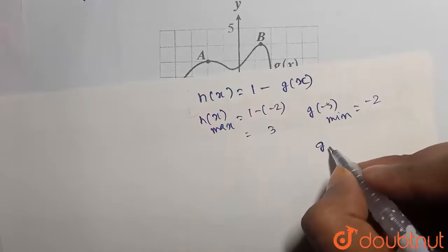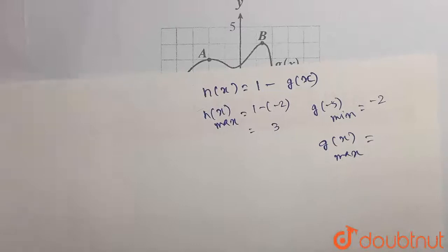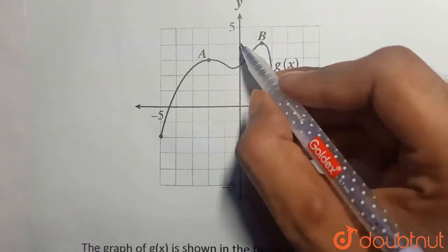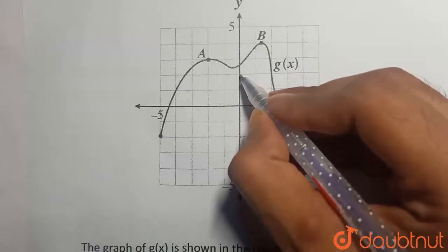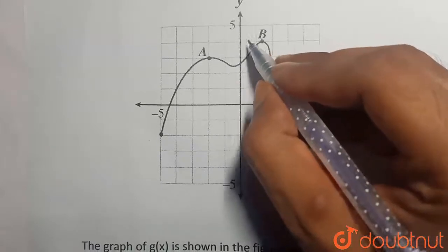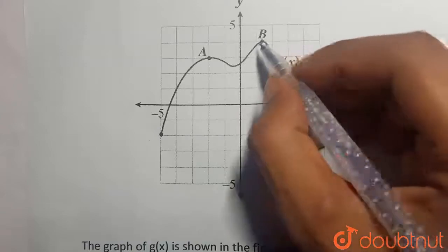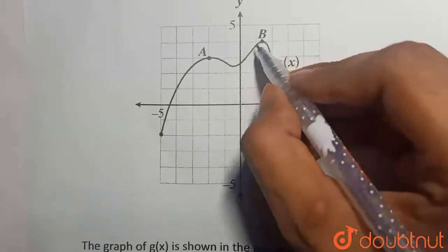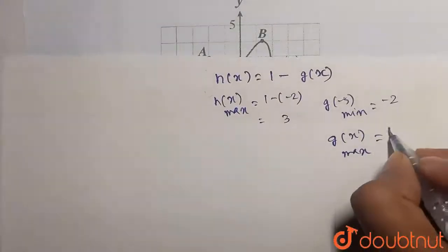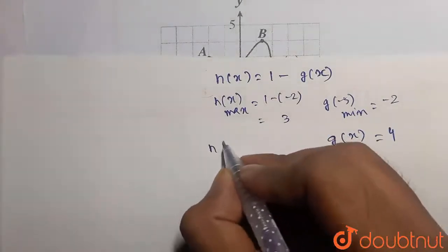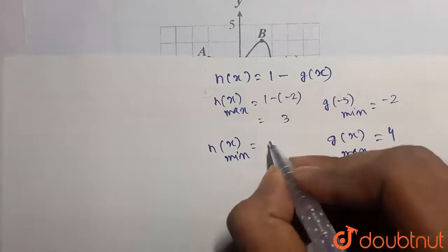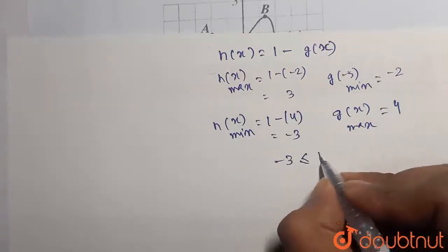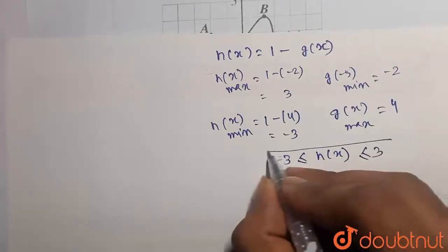Now let us find the maximum value of g(x). Again, we need to see the curve. The maximum value of g(x) is at point B. What is the y-coordinate of this point? This is 1, 2, 3, then 4. The highest point here — the y-part gives the value of g(x), and this is equal to 4. So the maximum value of g(x) is 4. Therefore, the minimum value of h(x) will be 1 minus 4, which equals minus 3. So the range will be minus 3 less than or equal to h(x) less than or equal to 3.